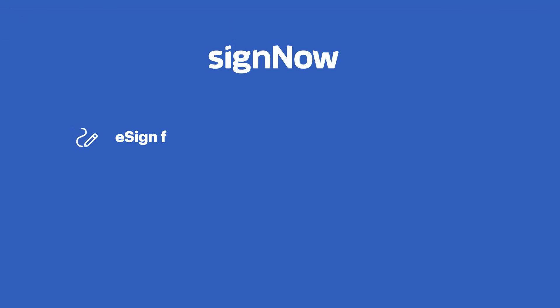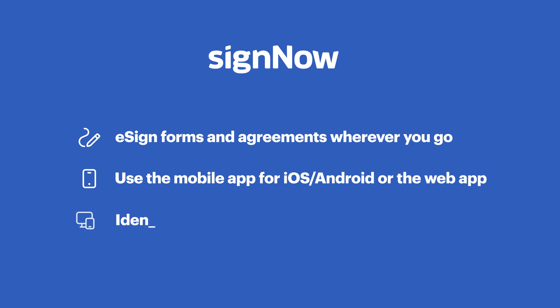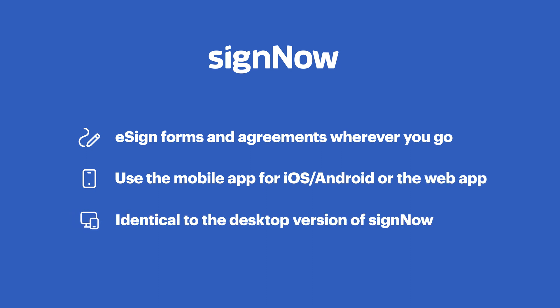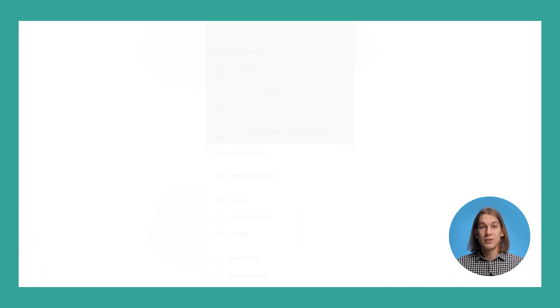With SignNow, you can e-sign your forms and agreements wherever you go using the mobile app for iOS and Android, which features the same functionality as the SignNow desktop app. Get started by uploading your document.